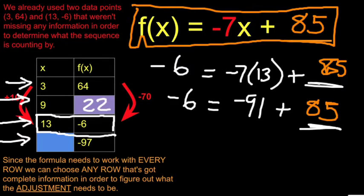And this guy here, a little bit tougher, a little bit more algebraic of a question. When f of x is negative 97, so negative 97 equals negative 7x plus 85. And I need to solve for x.